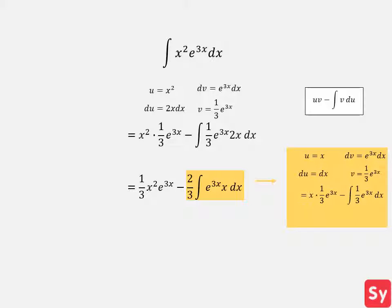We substitute these values into the integration by parts formula and can easily solve this integral. We get 1 third times x times e to the 3x minus 1 ninth times e to the 3x plus c.